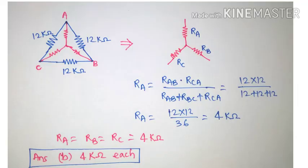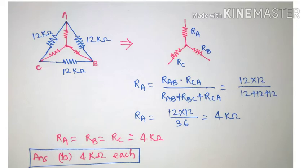Figure one shows the delta connected network containing 12 kilo ohm each, and figure two shows the star connected network having three resistances Ra, Rb, and Rc. We will now calculate Ra, Rb, and Rc. Since all three resistances are equal in value, calculating one resistance will give us the correct answer.